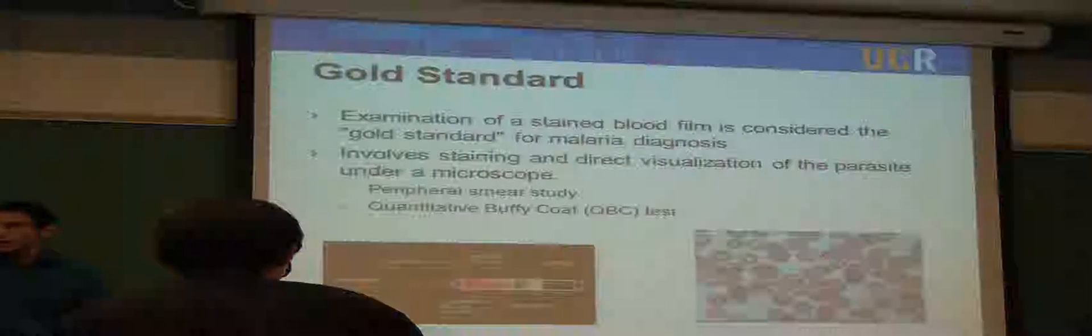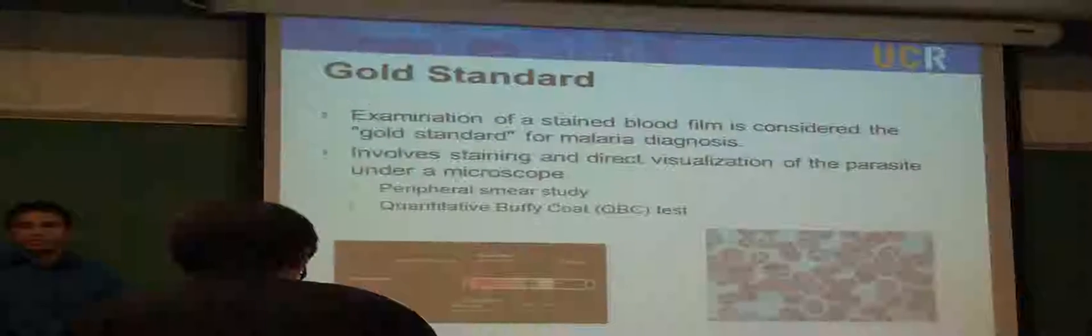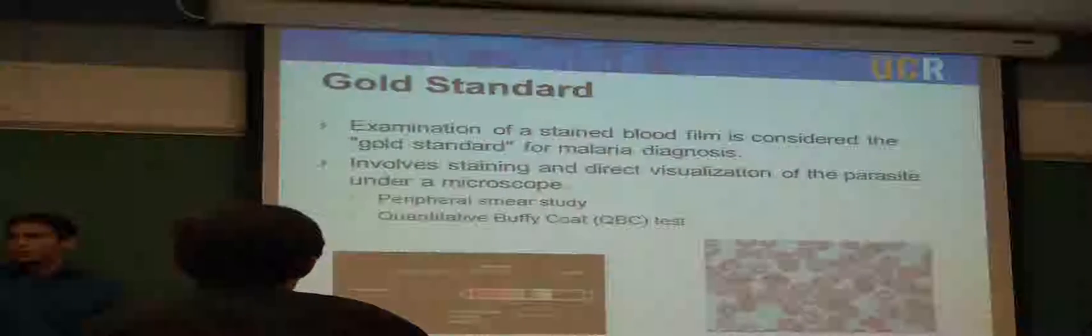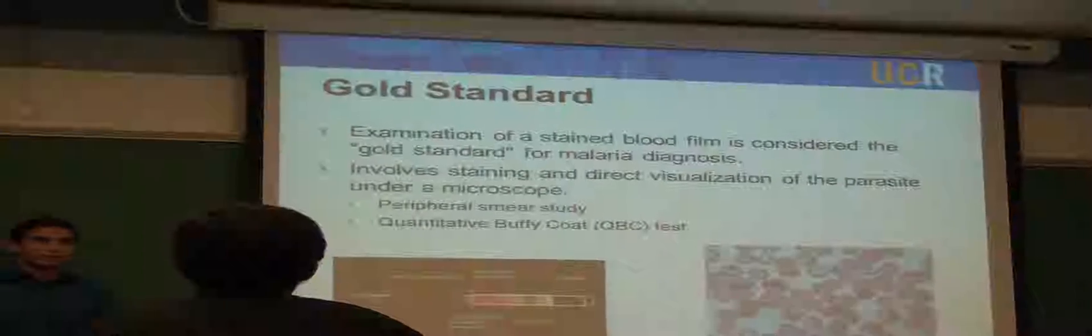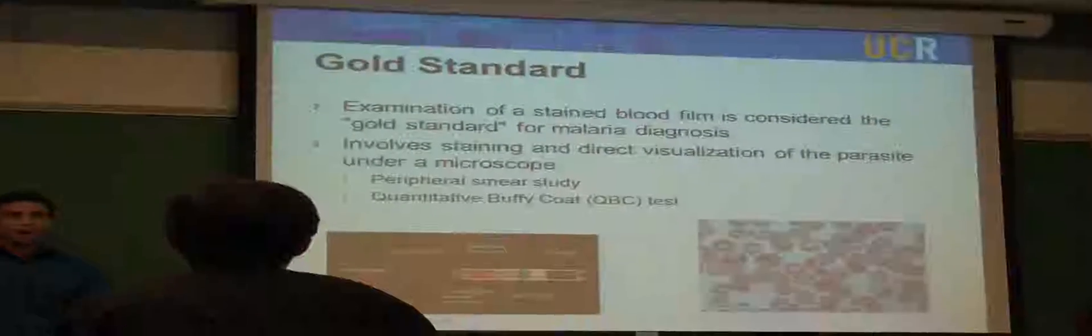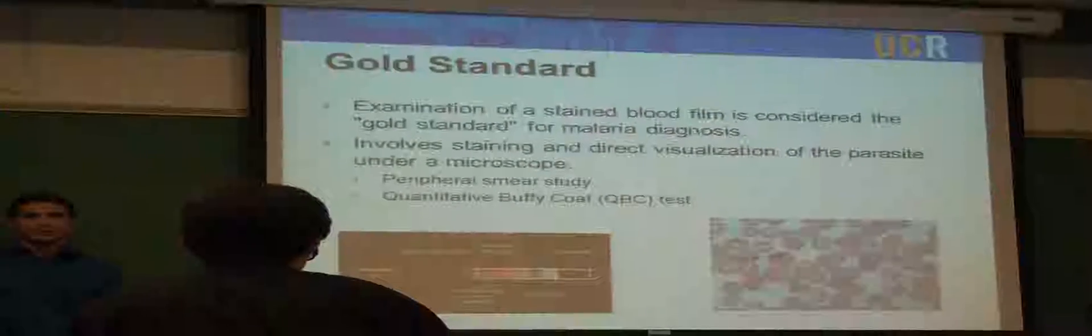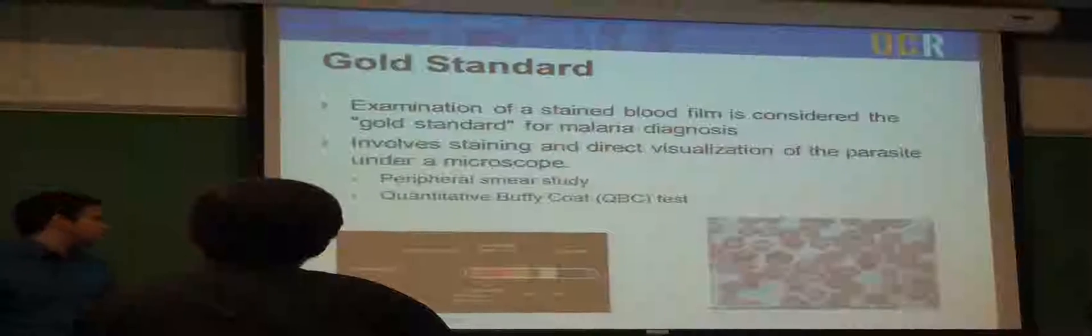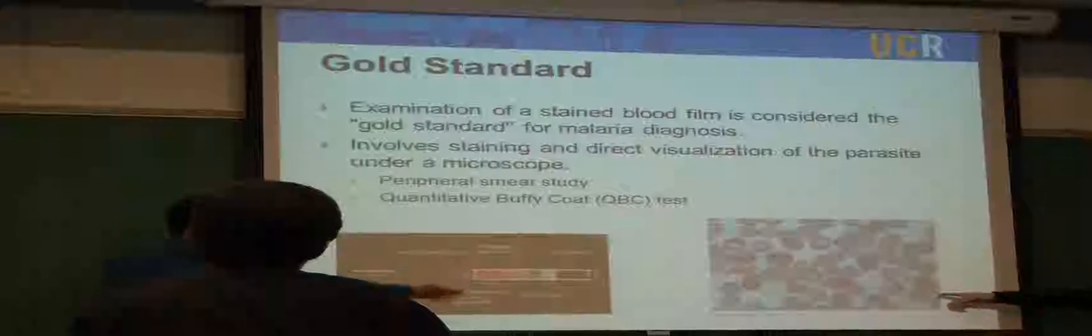Let's talk about the Gold Standard. Examination of a stained blood film is considered the Gold Standard for malaria diagnosis. It involves staining and a direct visualization of the parasite underneath a microscope. The two tests that are commonly done are peripheral smear studies and quantitative buffy coat tests. The quantitative buffy coat test is right here, and there's a peripheral smear study right there.